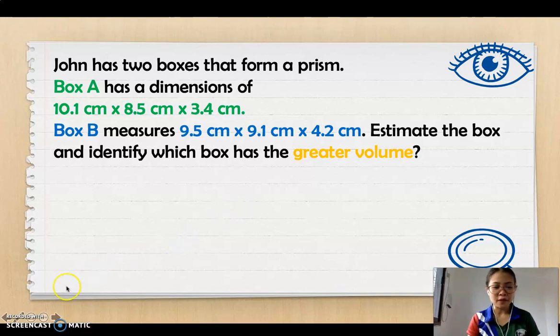First, let's find the volume of box A. First, let's write the formula. Volume equals length times width times the height. Then, we estimate. The length is 10.1 centimeters. When you estimate that to the nearest full number, since the tenths place value is less than 5, the rounding digit, which is the one's place value, remains the same. So, it becomes 10 centimeters.